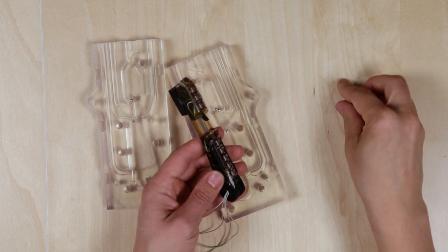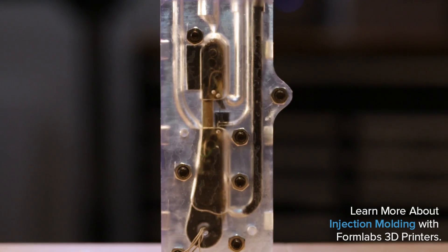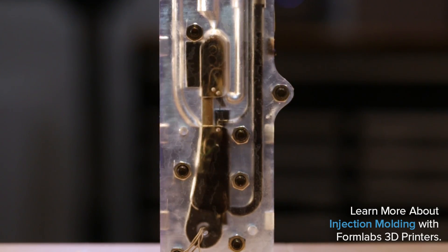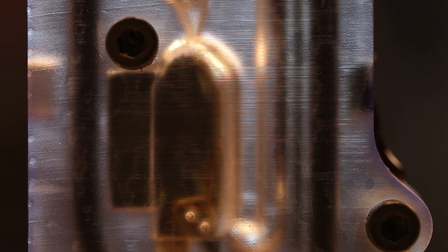The way that we make the fingers for Right Hand Robotics is we have a 3D printed core and some electronics, and we stick that into a mold, pour rubber around it, and then take it out, stick it into a secondary mold, and overmold around that.